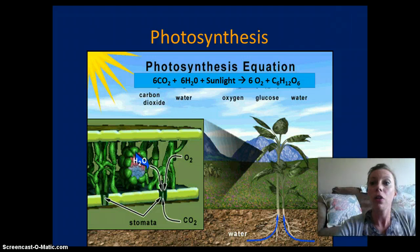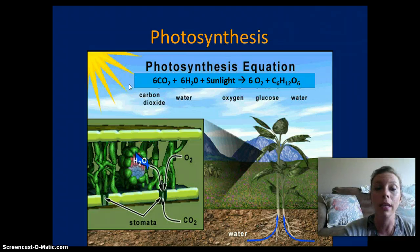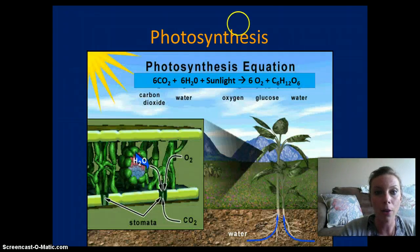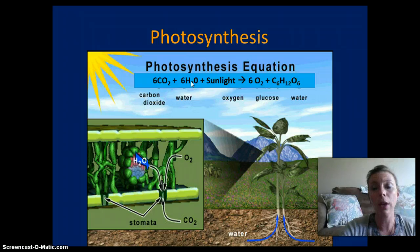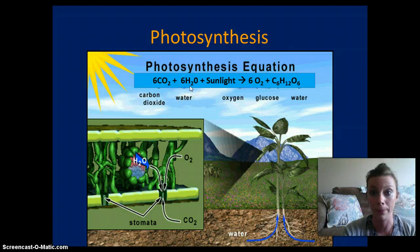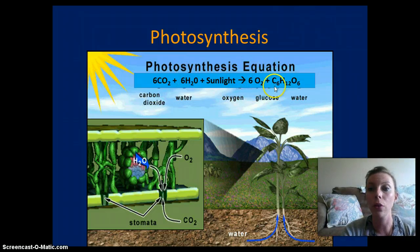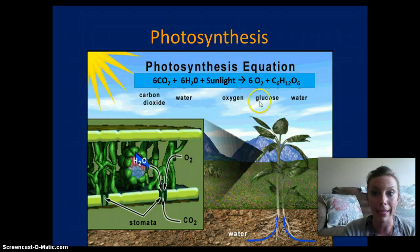The equation for photosynthesis is really important — you need to know the products and the reactants. The reactants are carbon dioxide (6CO₂) and water (6H₂O), with sunlight driving the reaction. The products are oxygen (6O₂) and glucose (C₆H₁₂O₆). Glucose is a carbohydrate and a sugar, or food.